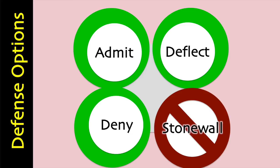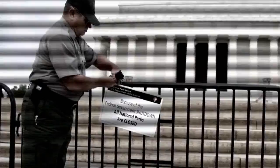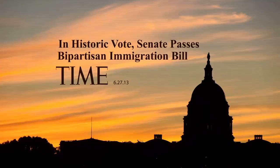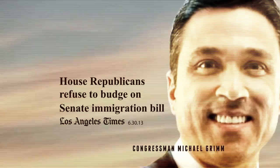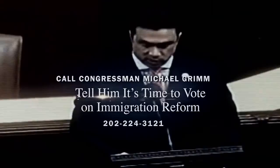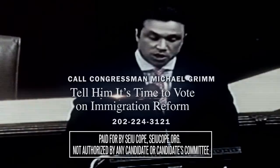How would you defend yourself from the following attack? Congressman Michael Grimm said he would get things done in Washington. But what have we seen? Government shut down. Nothing done in Congress. And while the Senate passed bipartisan comprehensive immigration reform months ago, there's still no vote by Grimm and the House Republicans to fix our broken immigration system. We elected Grimm to do a job, and he's not. Call Congressman Grimm — tell him the time for talk is over. It's time to vote on immigration reform. SEIU is responsible for the content of this advertising.